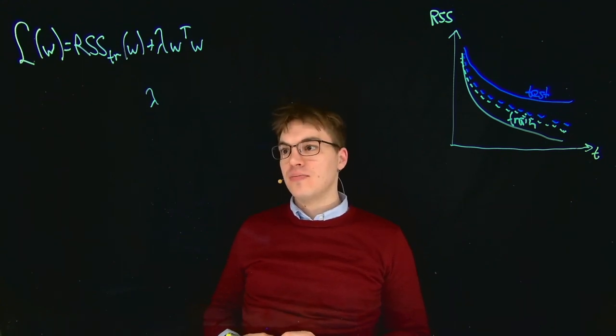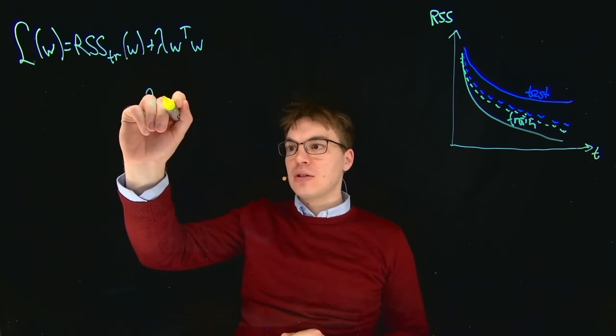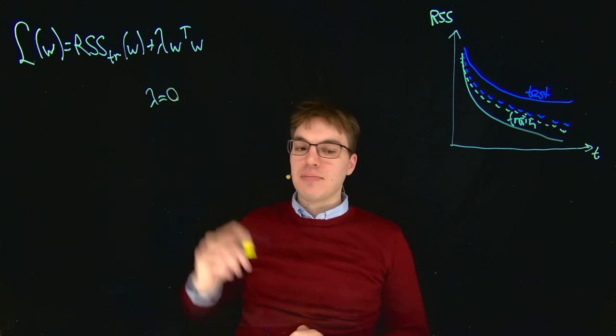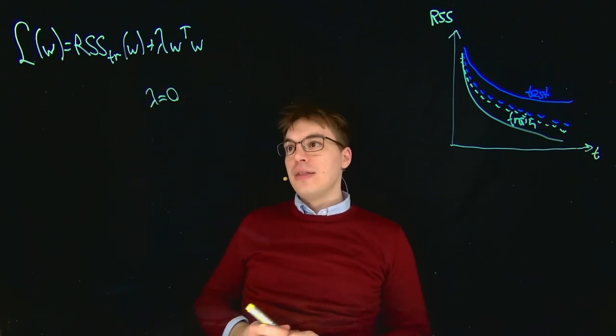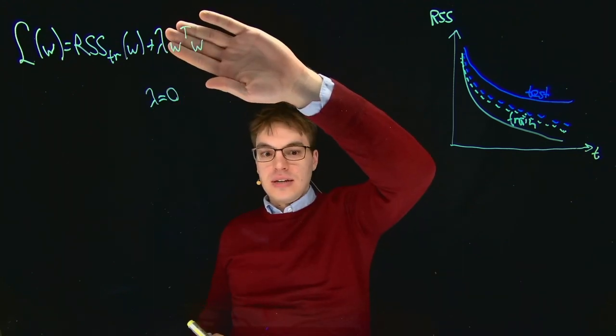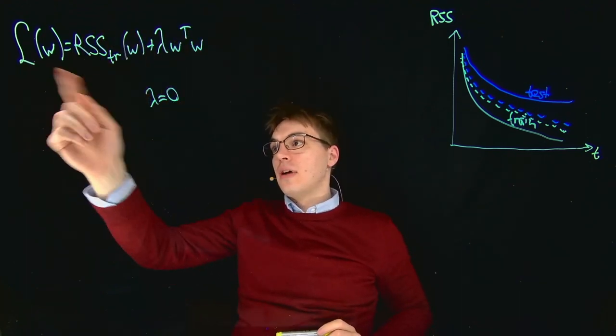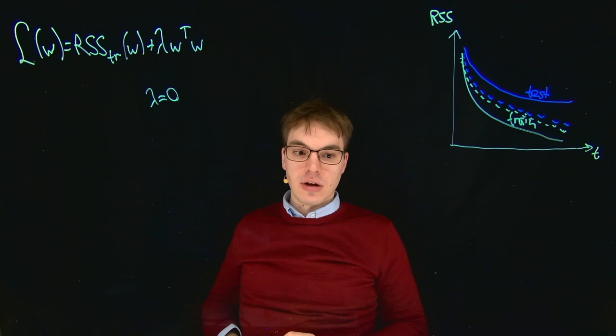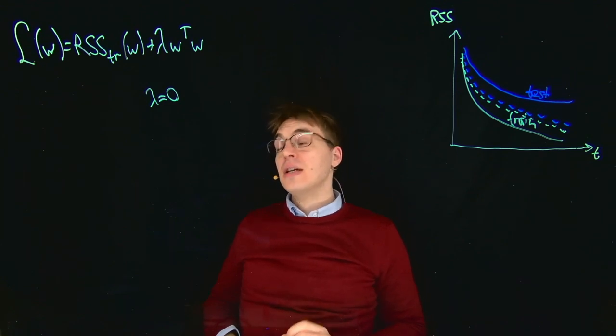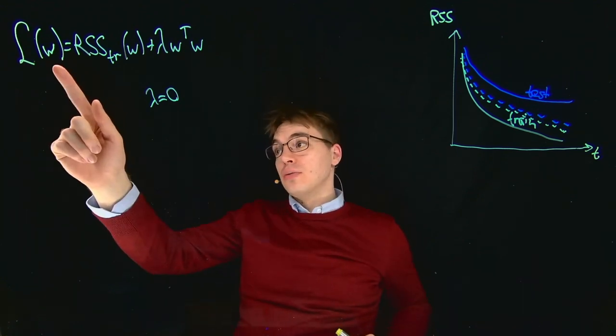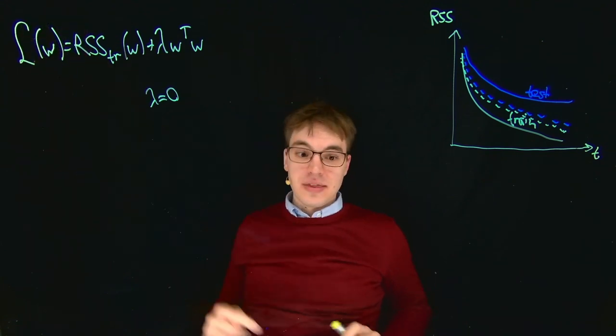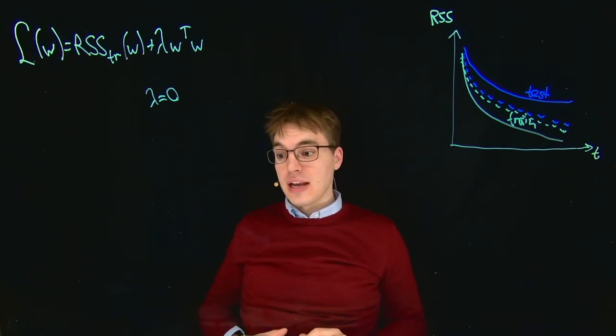So the first thing we want to consider is lambda equals 0, and this actually just leaves this term out and we simply get this case of our loss being identical to our RSS. And this means that for those W that optimize our loss, and this is exactly what we would do during training when we do gradient descent for example.